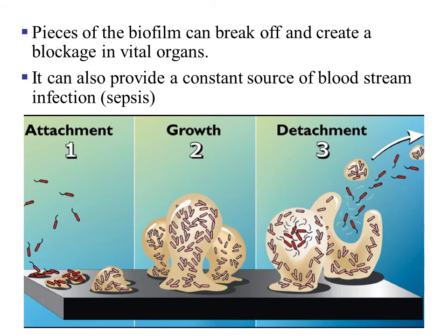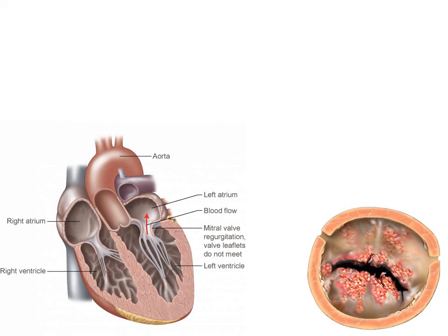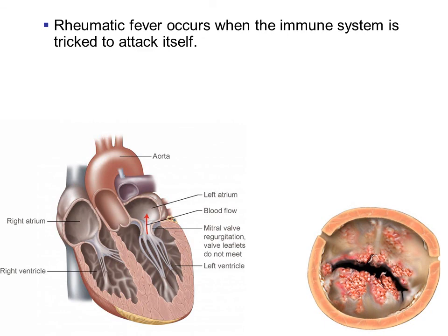Biofilm is a network of bacteria all clumped together. Pieces of this biofilm can break off and create a blockage to vital organs. It can also provide a constant source of bloodstream infection called sepsis — periodically, pieces will detach and get into the bloodstream. The biofilm can also lead to a misguided immune attack against the valve or the heart muscle, which is called rheumatic fever — when the immune system is tricked into attacking itself.